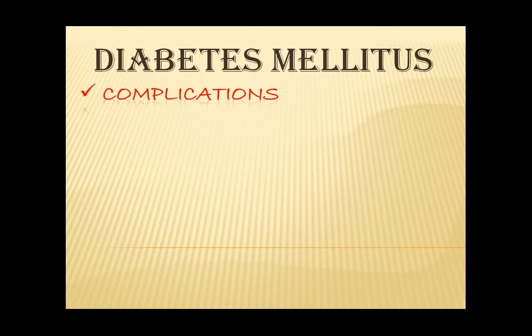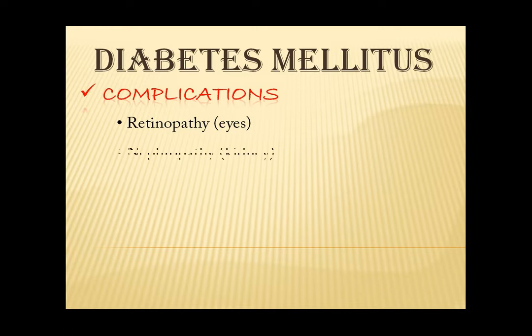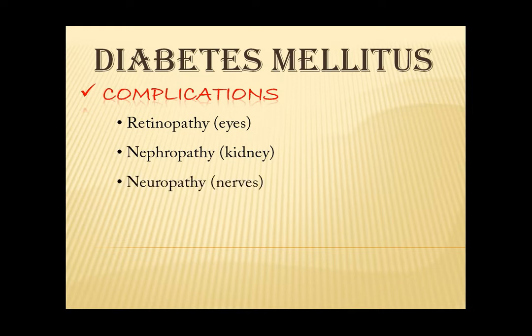Some common long-term complications will include retinopathy. Once blurring of vision occurs to patients with diabetes mellitus, they should visit an ophthalmologist to prevent further problems that can lead to blindness. Next is nephropathy — urine test and blood pressure monitoring is very vital to prevent and slow the kidney disease, which can also lead to dialysis if left untreated and not monitored. Lastly, neuropathy — numbness or tingling sensation in the hands or feet should be reported.